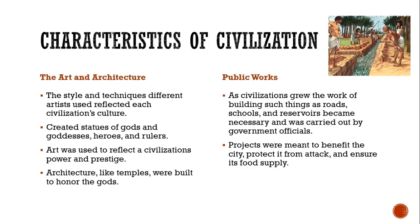The style and techniques of different artists reflected each civilization's culture. Each culture developed their own statues of their gods, heroes, and rulers. Art was often used to reflect a civilization's power and prestige — think how big the Egyptian pyramids are. Architecture like temples were also built to honor the gods and represent the power of that civilization. As civilizations grew, the work of building roads, schools, reservoirs, and irrigation ditches was carried out by government officials using tax dollars. These public works projects were meant to benefit the city, protect it from attack, and ensure it had a food supply.